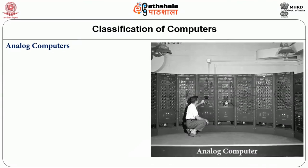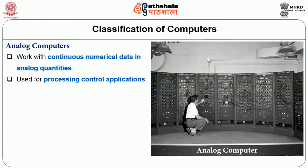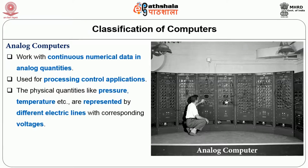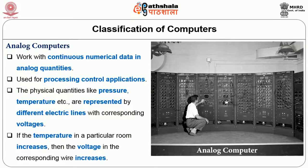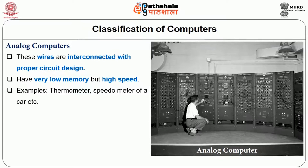Analog computers only work with continuous numeric data — analog quantities. These computers are used for processing control applications. Physical quantities like pressure, temperature, etc., are represented by different electric lines with corresponding voltages. If the temperature in a particular room increases, then the voltage in the corresponding wire increases. Analog computers have very low memory but work at high speed. Examples: thermometer, speedometer of a car, etc.